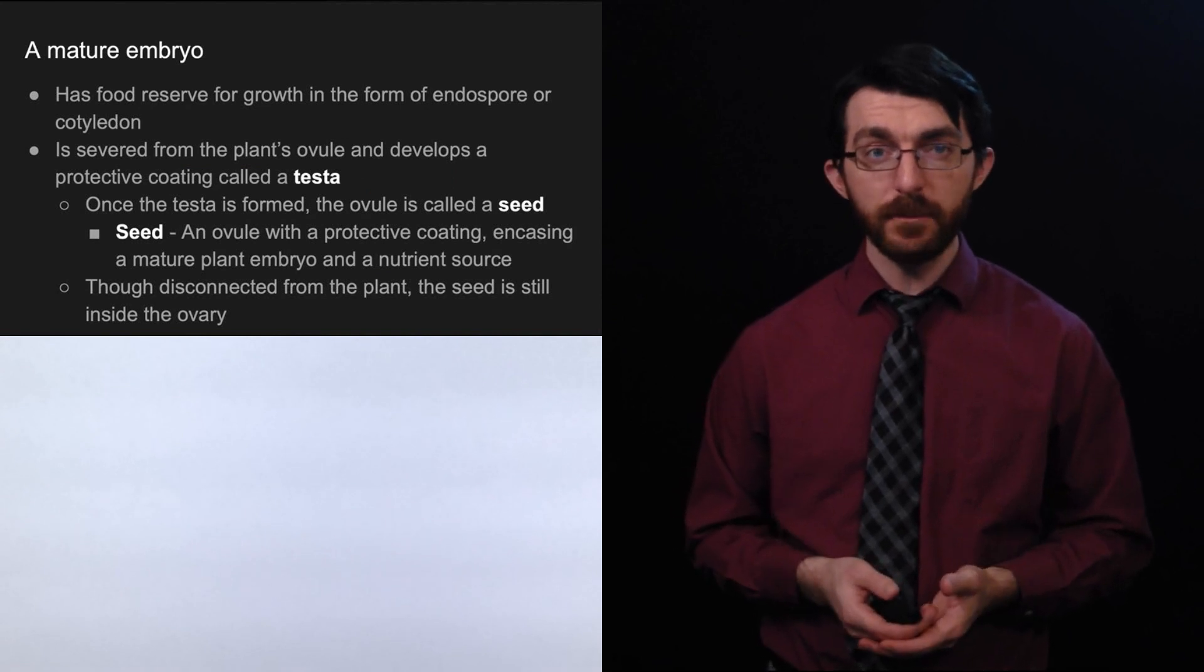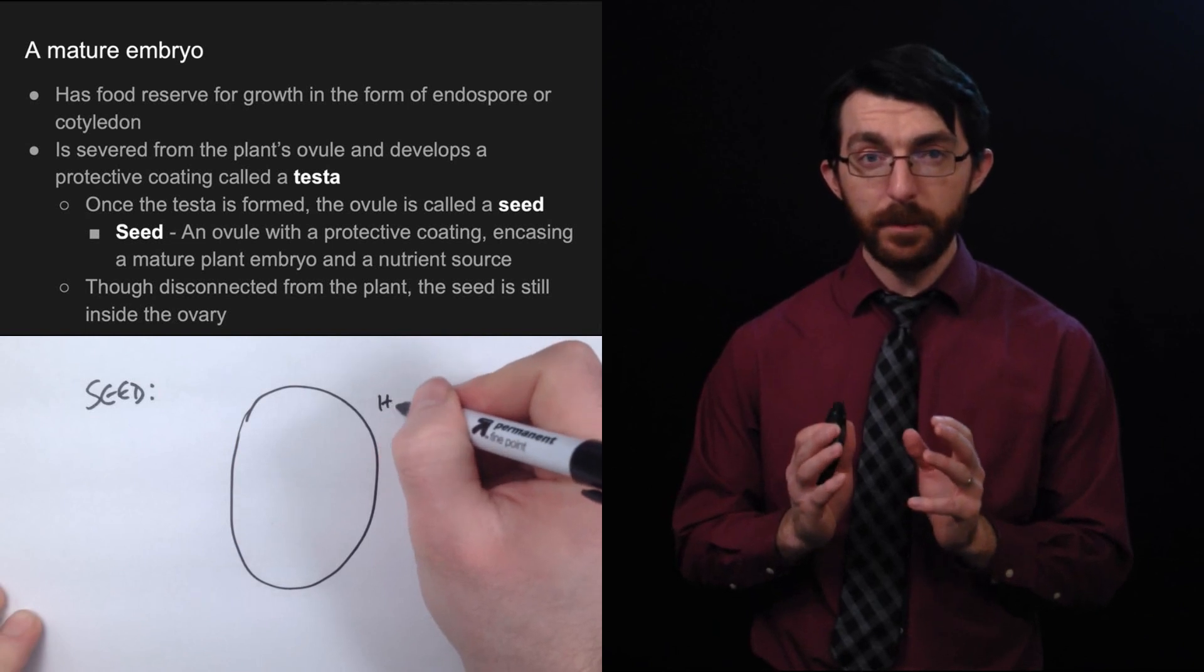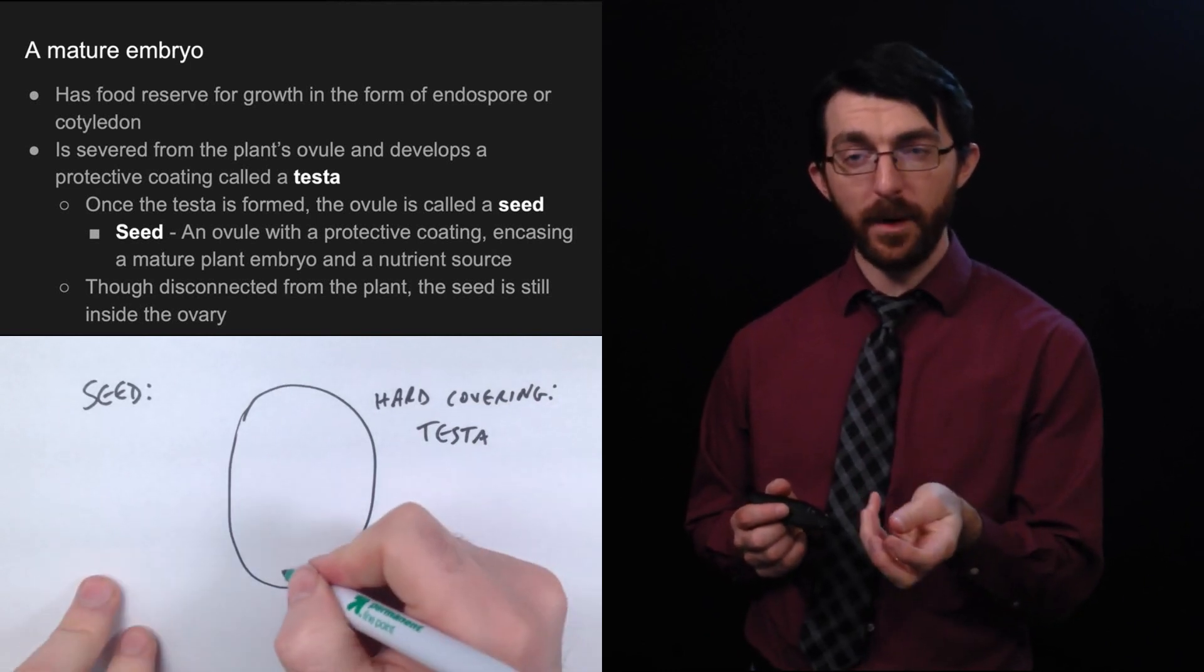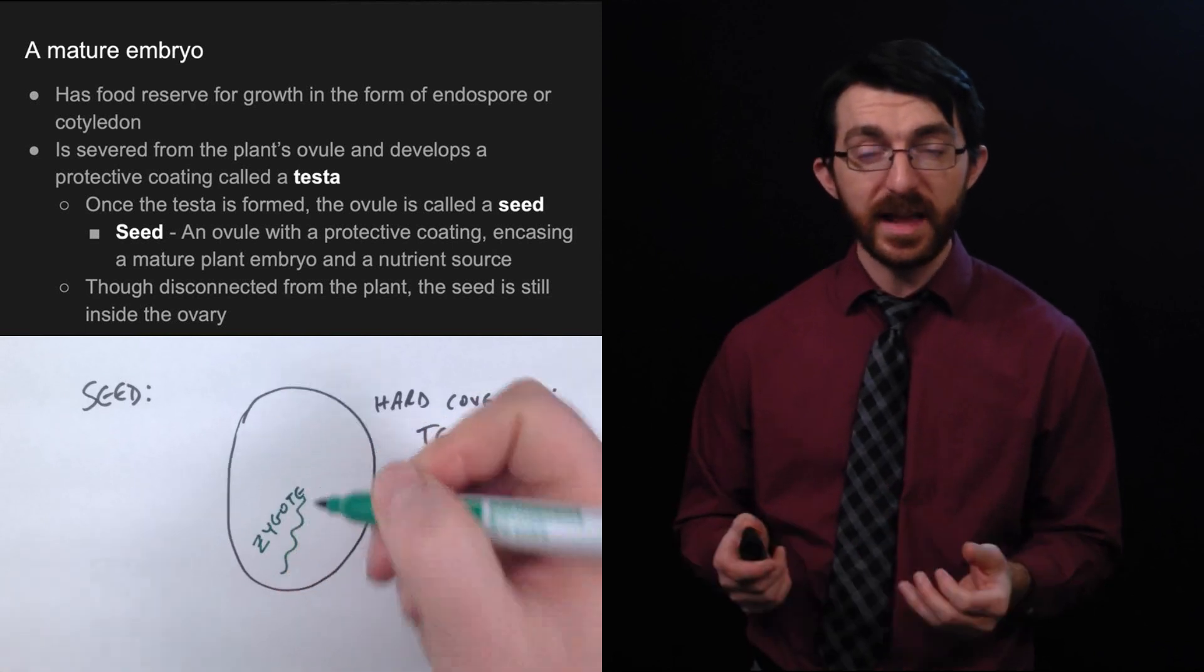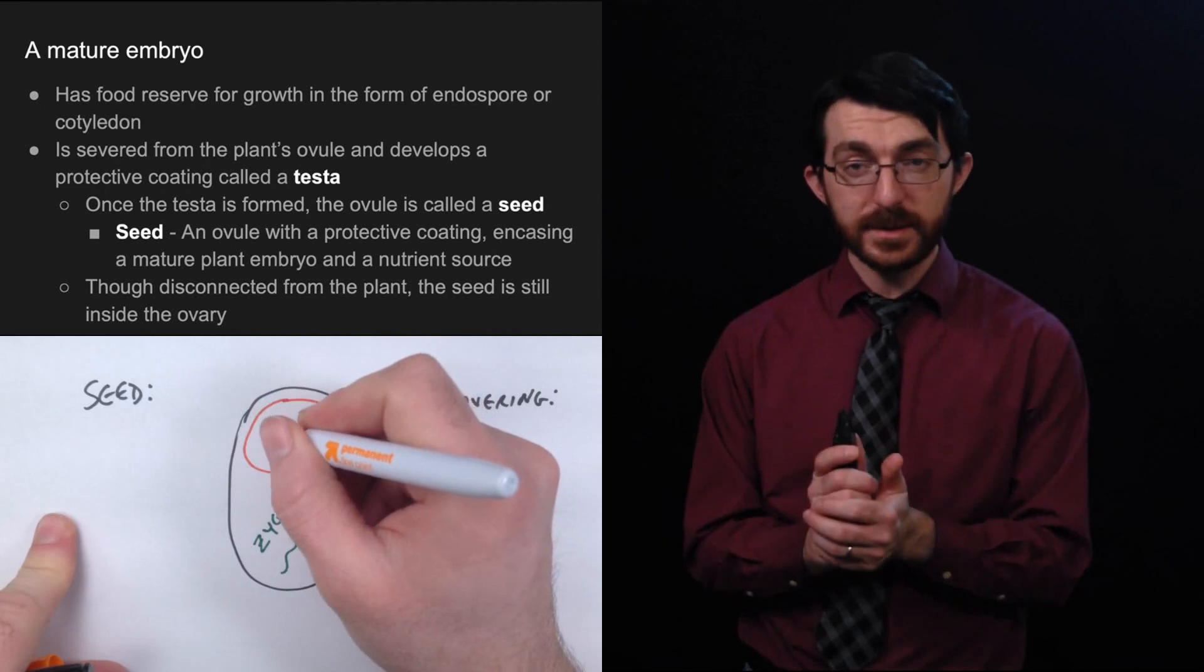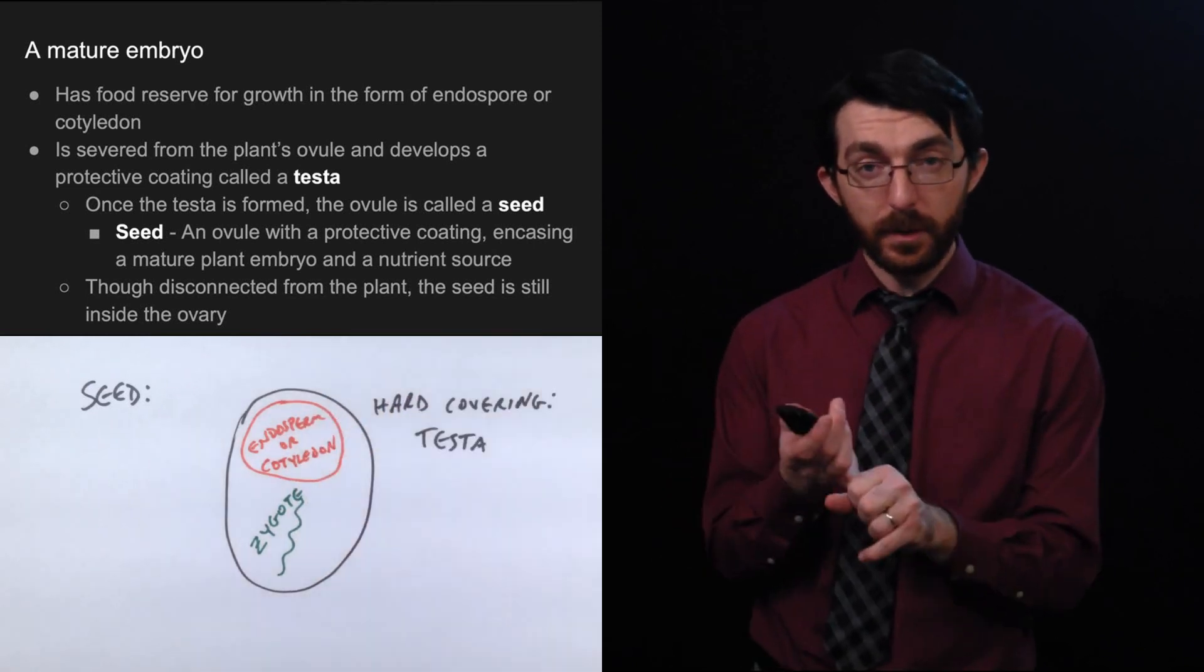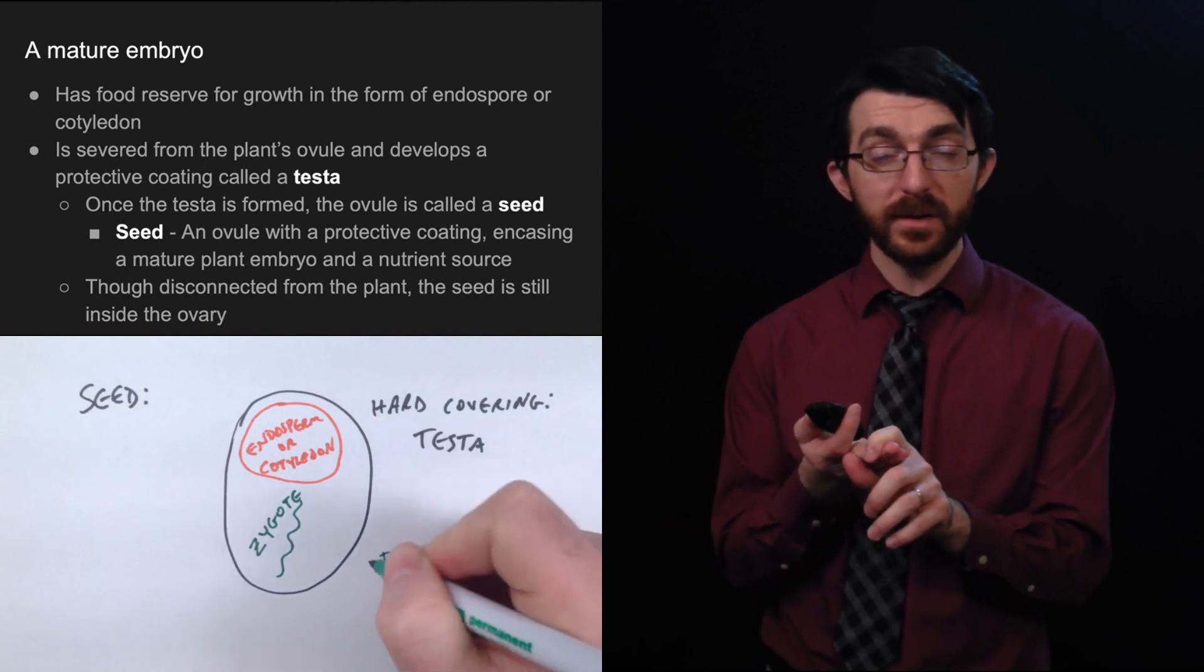So speaking of a mature embryo, it has a food reserve for growth in the form of an endospore or a cotyledon. And then it needs to be severed from the plant's ovule and develop a protective coating called a testa. So we've got a brand new baby embryo plant right inside of a flower that has become fertilized. When it's building up its energy storage, then at some point it needs to be able to disconnect itself from the plant that produced it so it can go off and be planted and sprout somewhere else. So when it separates from the flower that produced it, it develops this hard coating called a testa. And once this testa is formed, we can now call that a seed. A seed is just an embryo, some food source like an endosperm or a cotyledon or two, and a hard coating that protects it and contains it. There's your seed.